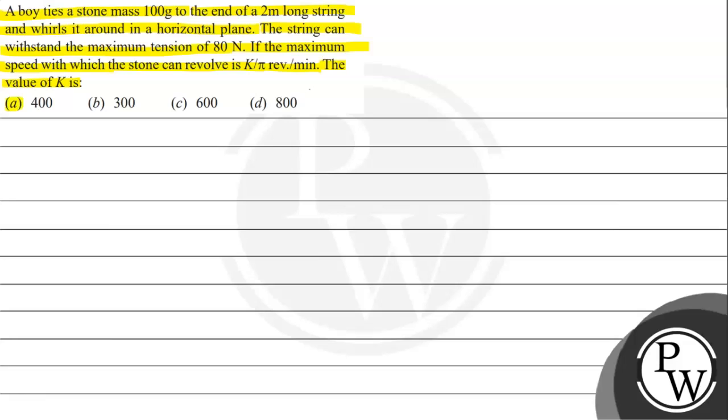Option A: 400, option B: 300, option C: 600, option D: 800.